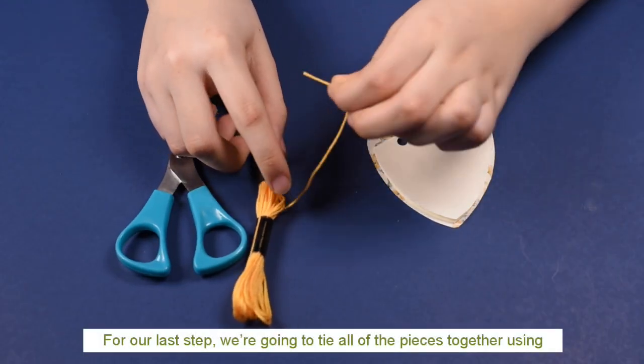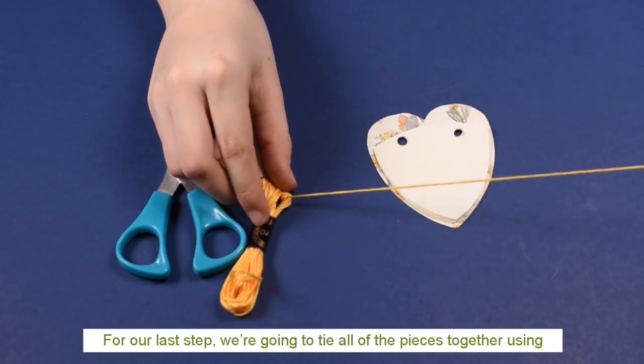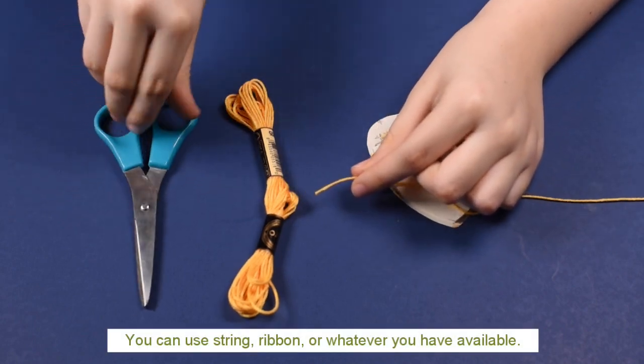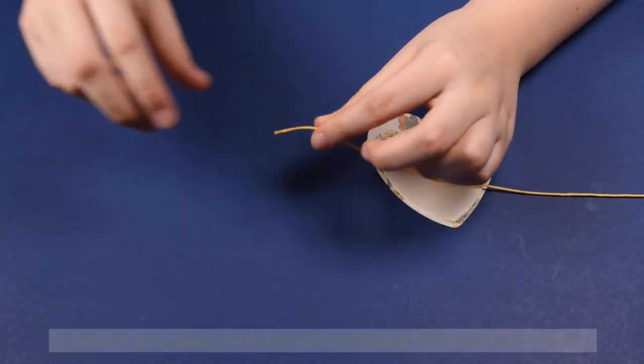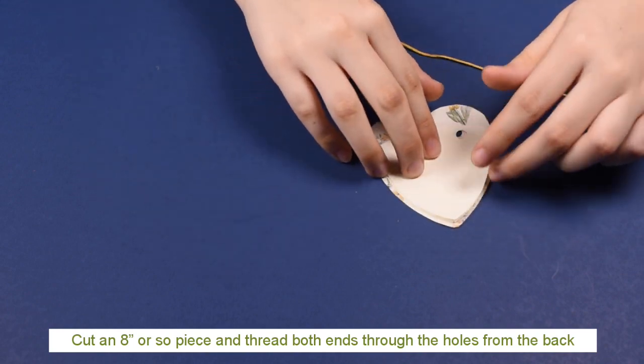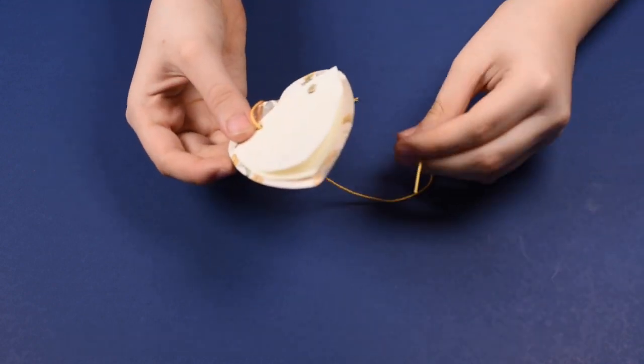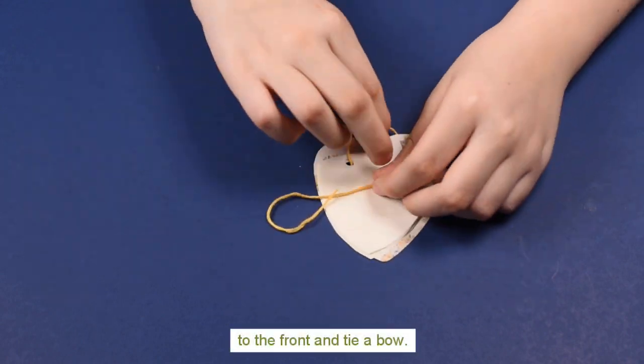And now for our last step, we're going to tie all of the pieces together using some colored embroidery thread. You can use string, ribbon, or whatever you have available. You're going to cut an eight inch or so piece and thread both ends through the holes from the back to the front and tie a bow.